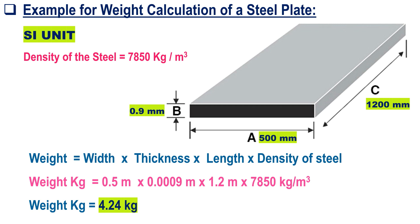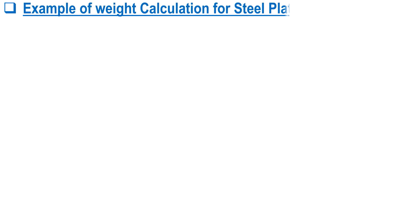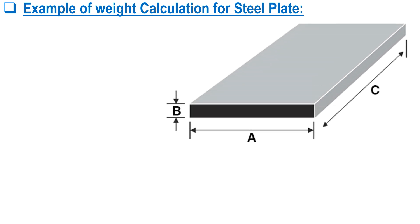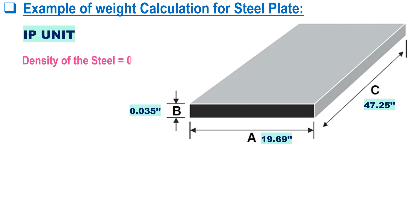The above calculation demonstrates how to find the weight of a steel plate using the SI units formula. Similarly, we will look at another calculation example in imperial units. The dimensions of the steel plate are: width equals 19.7 inches, length equals 47.25 inches, and thickness is 0.035 inches.